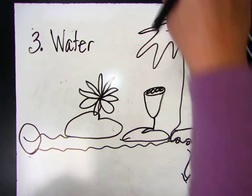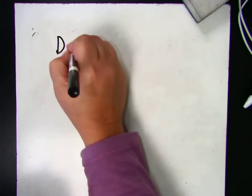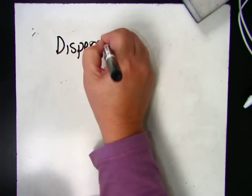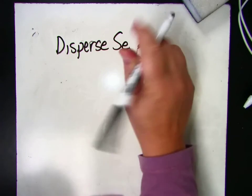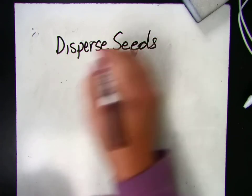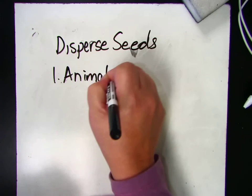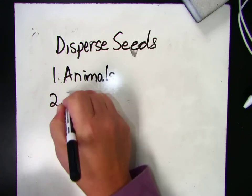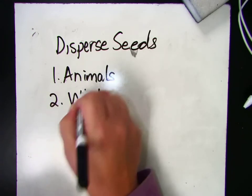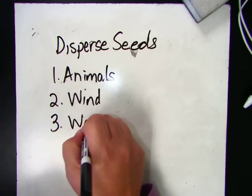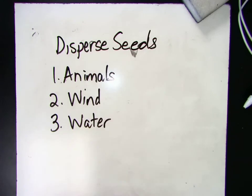So plants use three different ways to disperse seeds. They disperse their seeds or spread their seeds by animals. And humans are animals, so we do the same. We help them by wind and by water. Thank you.